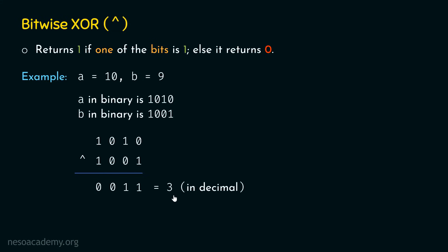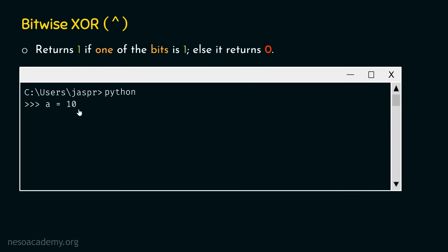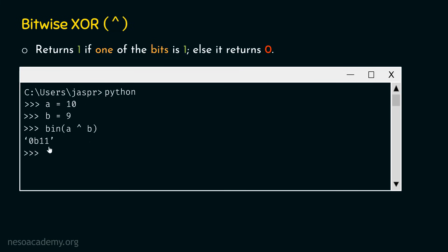Let's verify this with the Python interpreter. We go to the command prompt, type A = 10, then B = 9, then A ^ B, and we get 3. Python always returns a decimal value. To get the binary representation, we pass A ^ B to the bin() function and get 0b11. You can also pass ~A to the bin() function to check the binary result from the NOT operation.